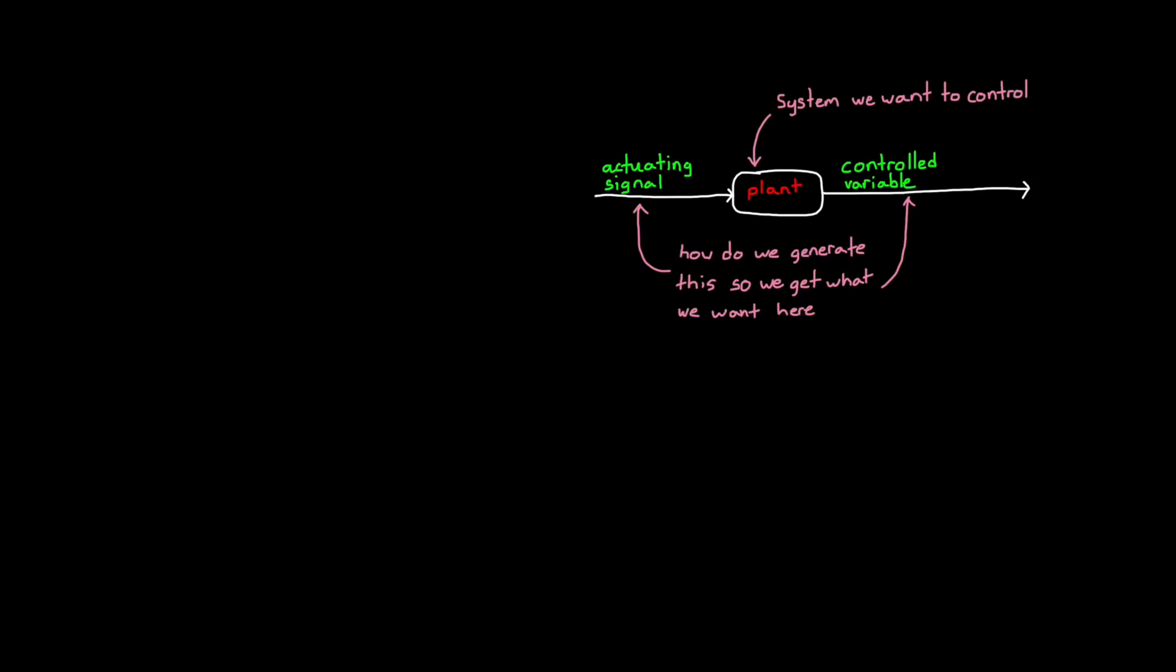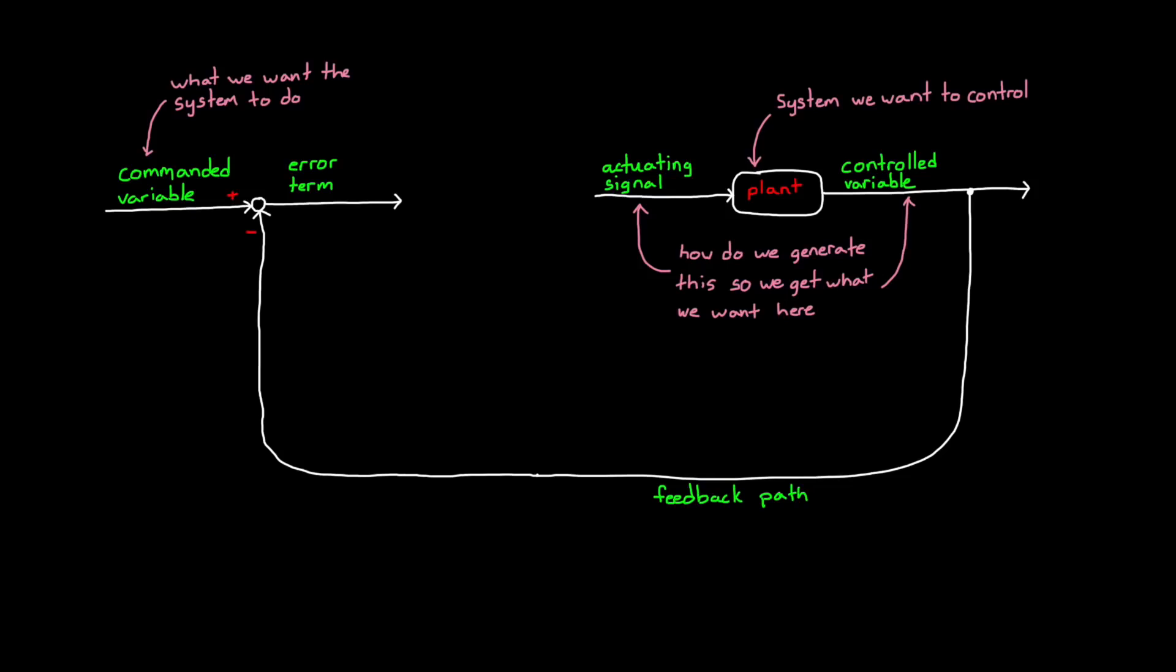The output you want also goes by various names. Here, I call it the command or the commanded variable. But you might also hear it as the setpoint, the reference, or the desired value. In feedback control, the output of the system is fed back, hence the name, and compared to the command to see how far off the system is from where we want it to be. This difference between the two is the error term. The question is, how do we take this error term and convert it into suitable actuator commands so that over time, the error is driven to zero? And the answer is with a controller.